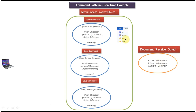If the user clicks on close, the invoker object will call the execute method of the close command, which will then call the document object's close method to close the document. Similarly, if the user clicks on save, it will call the save command's execute method, which will use the document object reference to call the save method and save the document.